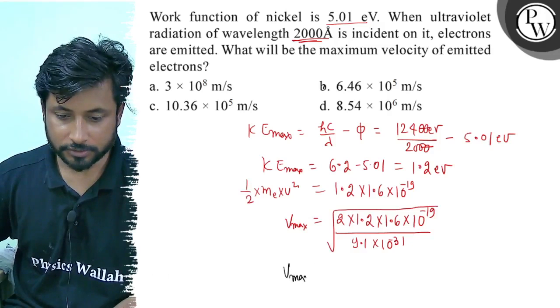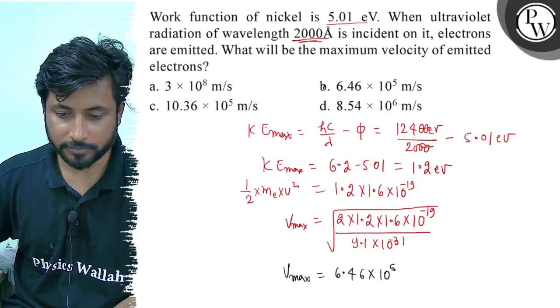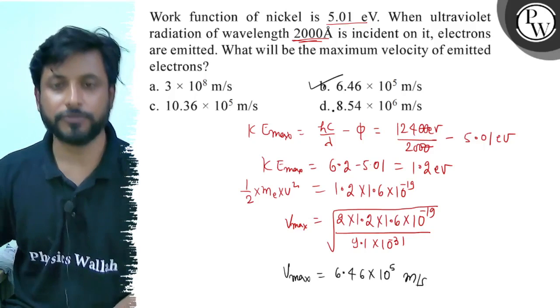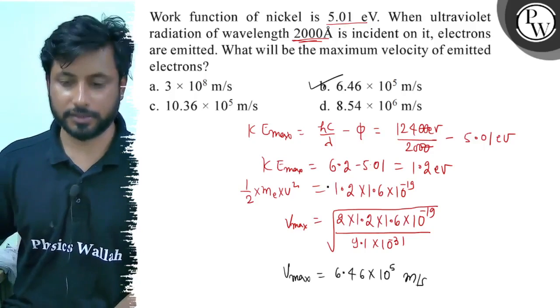V max equals 6.46 × 10^5 meter per second. And so final answer is option B: 6.46 × 10^5 meter per second. Let's talk about it.